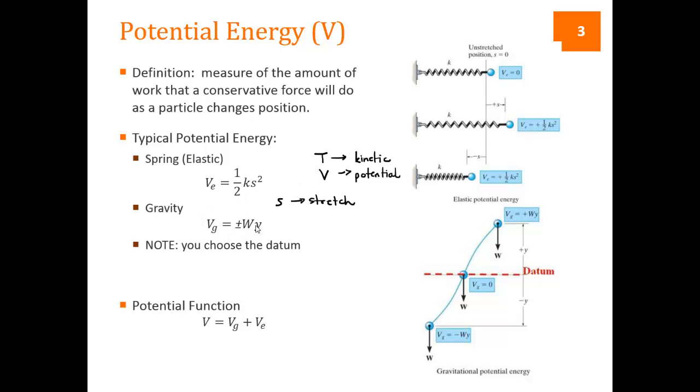Gravity has a potential energy of weight times the distance Y, which can also often be written as MGH or Y. So MGH is just the weight. Y is the height. This is relative to a datum. You get to pick that datum. So long as you use the same datum for all the points you're looking at, it doesn't matter what datum you pick.